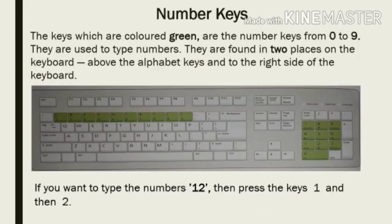Next are number keys. The keys which are colored green on your screen are the numbers from 0 to 9. They are used to type numbers. They are found in two places on the keyboard: above the alphabet keys and to the right side of the keyboard. For example, if you want to type the number 12, press the keys 1 and then 2.